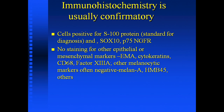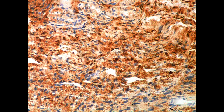All the other markers are negative and the melanocyte markers are negative in the spindle cell areas. Here's the S100 stain — you can see cytoplasmic and nuclear staining.